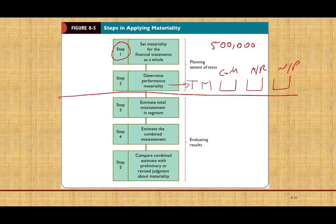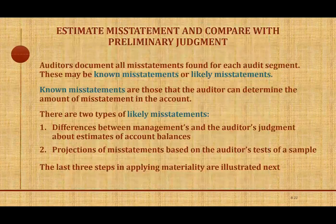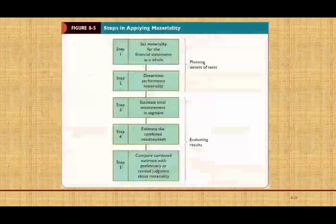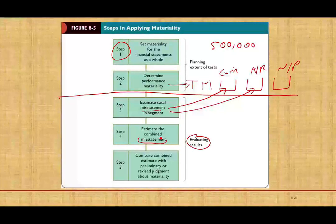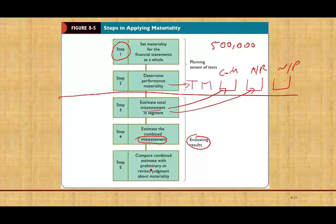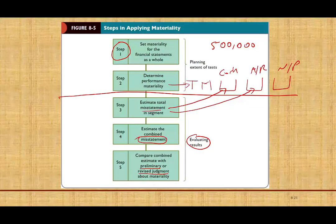In this session, we're going to evaluate the results. By evaluating the results, we're going to estimate the total misstatement in each segment — for example, cash is a segment, account receivable is a segment. Then estimate the combined misstatement, and we'll see why we combine misstatements in a moment. Then compare the results to the preliminary or revised judgment about materiality, and make a decision based on what we did.